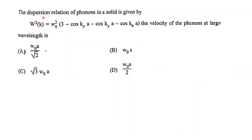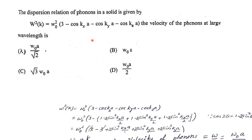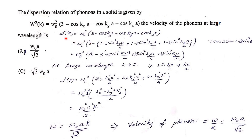The dispersion relation of phonons in a solid is given by ω²(k) = ω₀²(3 − cos(kx·a) − cos(ky·a) − cos(kz·a)). We need to find the velocity of phonons at large wavelength.